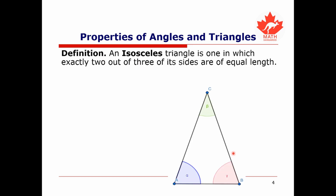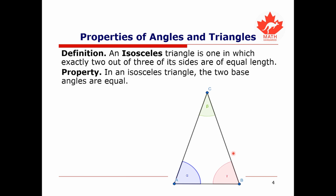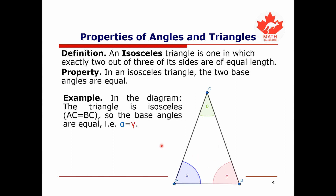Next, we arrive at the concept of an isosceles triangle. An isosceles triangle is one in which exactly two out of its three sides are of equal length. A property of an isosceles triangle is that the two base angles are always equal — specifically, the angles corresponding to the sides of equal length. In this diagram, the triangle is isosceles because AC equals BC, so the base angles are equal: alpha equals gamma.